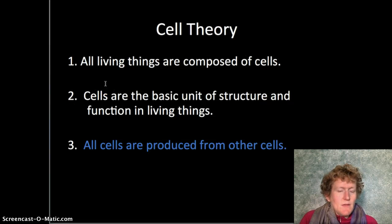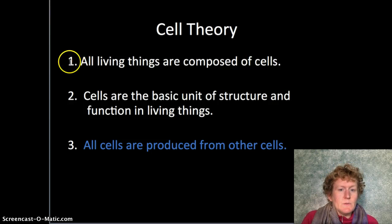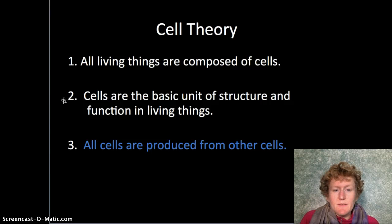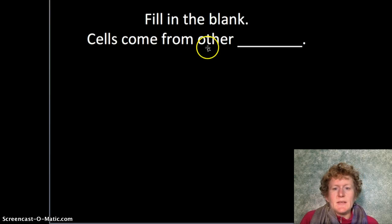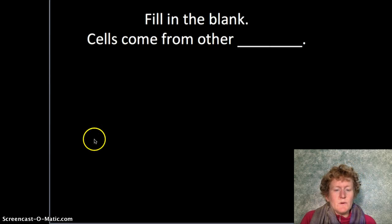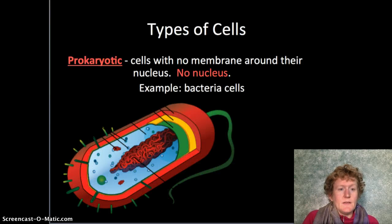Remember, cell theory has three important parts. All living things are composed of cells. Cells are the basic unit of structure and function in living things. All cells are produced from other cells. Remember this last one — cells come from other cells. That's an important part of the historical theory of cells.